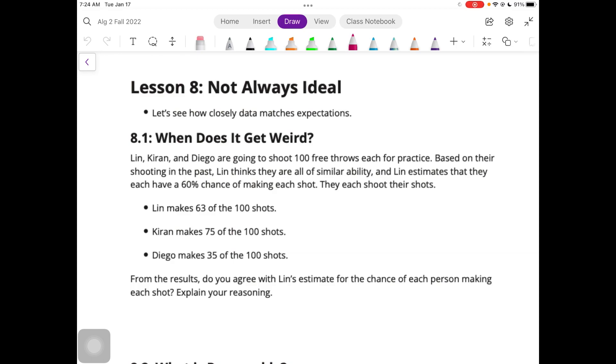Lynn, Kieran, and Diego are going to shoot 100 free throws each for practice. Based on their shooting in the past, Lynn thinks they are all of similar ability, and Lynn estimates that they each have a 60% chance of making each shot. They each shoot their shots. Lynn makes 63 of the 100 shots. Kieran makes 75 of the 100 shots. And Diego makes 35 of the 100 shots.